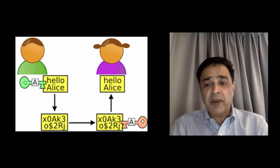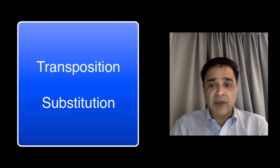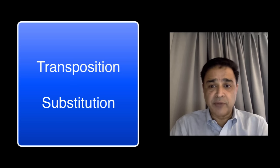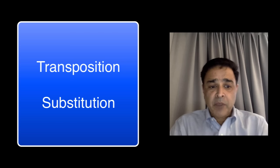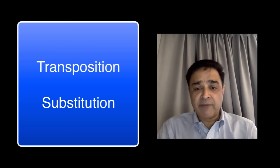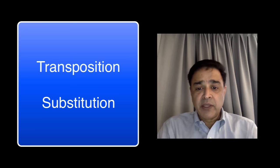Cryptography is further divided into two implementation techniques: transposition and substitution. It is also possible to combine cryptography and steganography together to achieve a higher level of security.